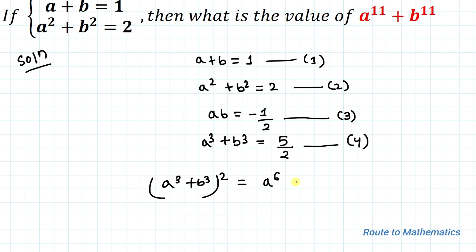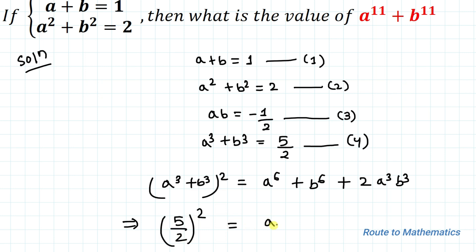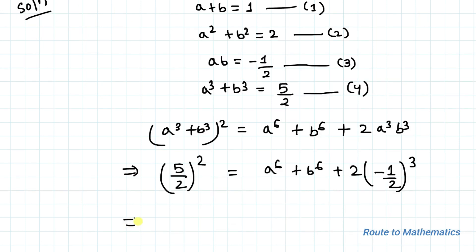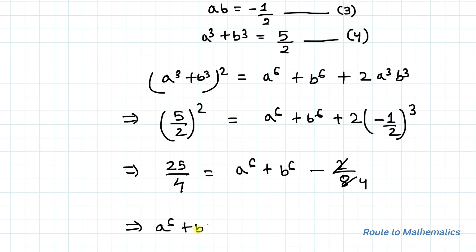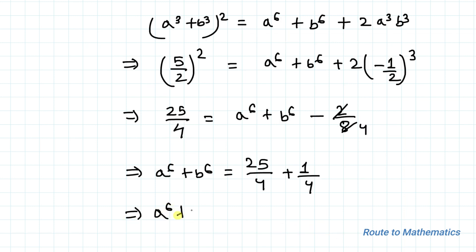Now we square (a cubed plus b cubed) to get a to the power 6 plus b to the power 6 plus 2(ab) cubed. Substituting from equation 4: (5 by 2) squared equals a to the power 6 plus b to the power 6 plus 2 times (minus 1 by 2) cubed. This gives 25 by 4 equals a to the power 6 plus b to the power 6 minus 2 by 8, so a to the power 6 plus b to the power 6 equals 25 by 4 plus 1 by 4, which equals 26 by 4, simplifying to 13 by 2. Let's call this equation 5.